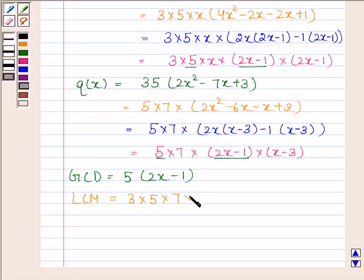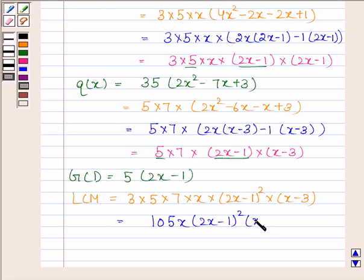And LCM is 3 into 5 into 7 into x into 2x minus 1 whole square into x minus 3. And this is equal to 105x into 2x minus 1 whole square into x minus 3.